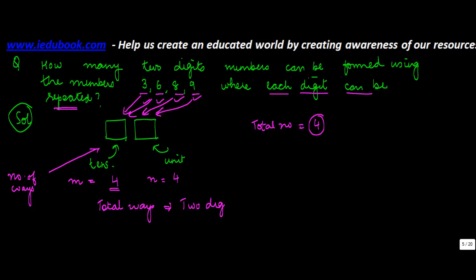So the total ways, which also represents the two-digit number, is equal to M into N, which is 4 into 4 equals 16 ways. Or 16 two-digit numbers can be formed using these numbers where each digit can be repeated.